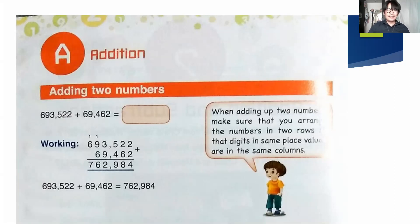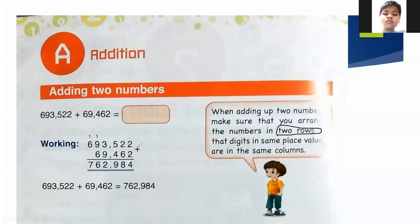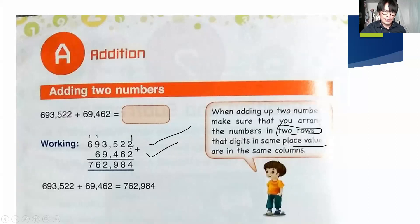On page 16, the first example is 693,522 plus 69,462 equals blank. When adding two numbers, make sure you arrange the numbers in two rows. The digits in the same place value must be aligned — ones, tens, hundreds, thousands, ten thousands, hundred thousands. You can see they are properly arranged.